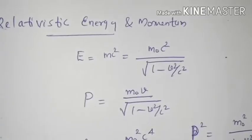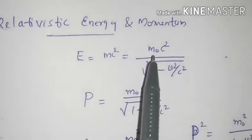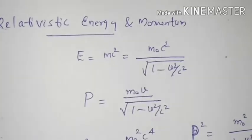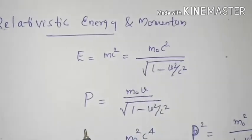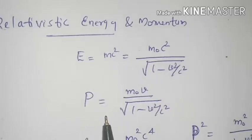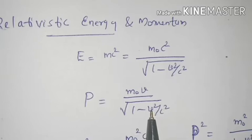When we substitute the value of relativistic mass, m is equal to m₀ divided by the square root of (1 minus v²/c²), where m₀ is the rest mass of the particle. The relativistic momentum of this particle is then m₀ divided by √(1 − v²/c²), multiplied by v, since momentum equals mass times velocity.